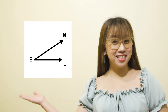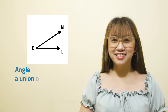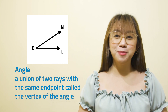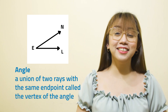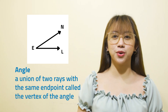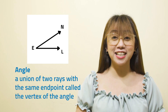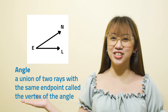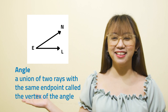Lastly, can you name this? This is an angle. An angle is a union of two rays with the same endpoint. The common endpoint is called the vertex of the angle. An angle can be named using only the vertex or using three letters where the middle letter is the vertex and the other two are points on the sides.